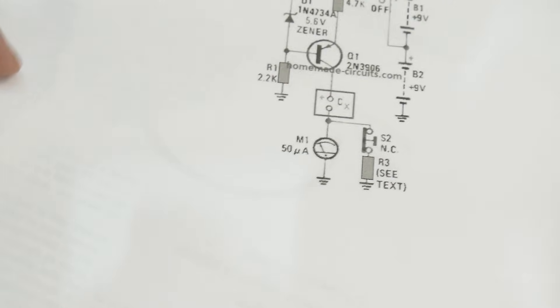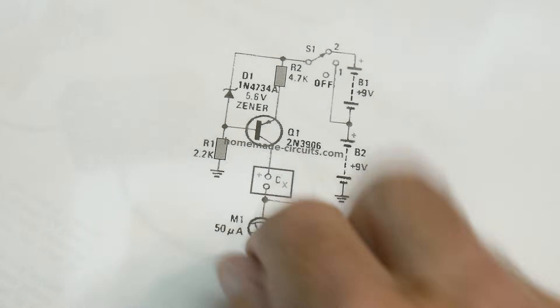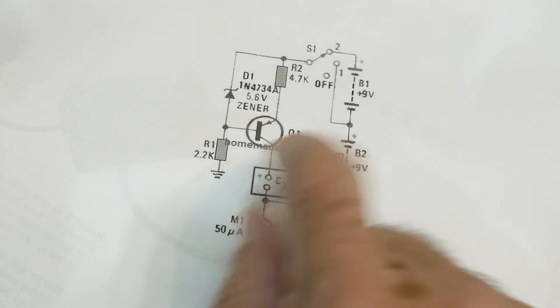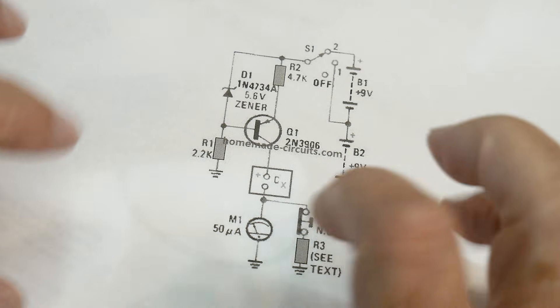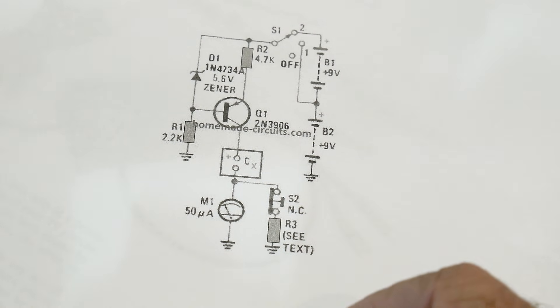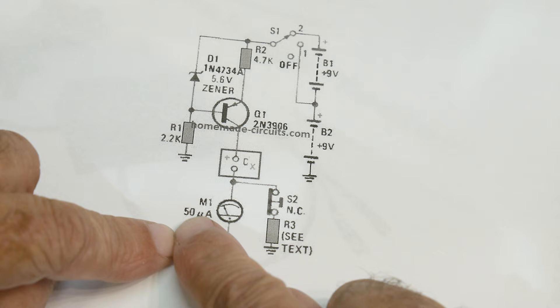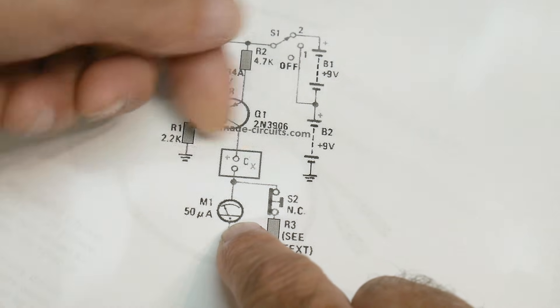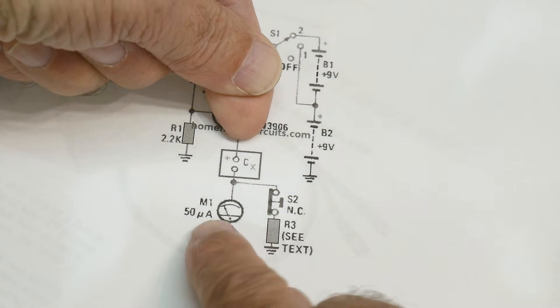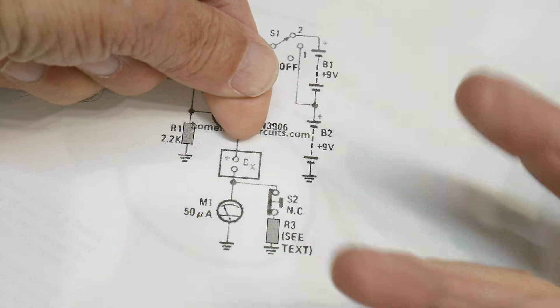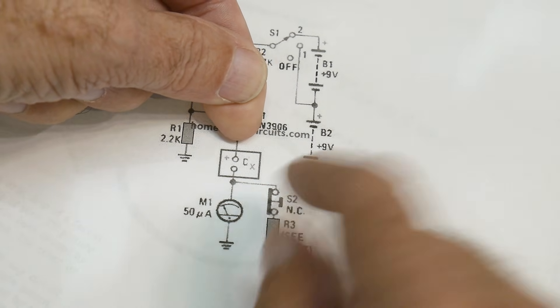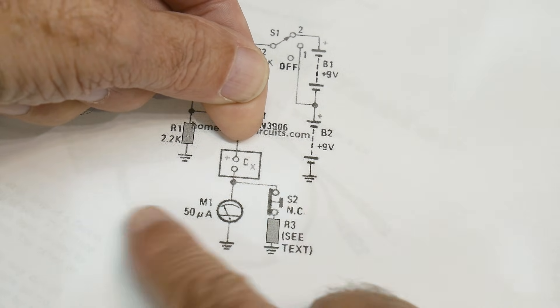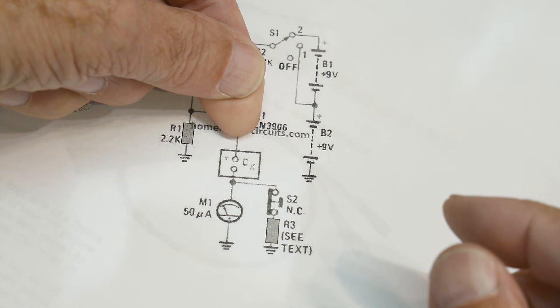I found this one, which is another very old circuit. It's just using a microamp meter. This is a 50 microamp meter. Any leakage through the capacitor will show on the meter. And if you want to do the short circuit thing, like I just showed over there, you can put a little push button on it so you can watch the meter.